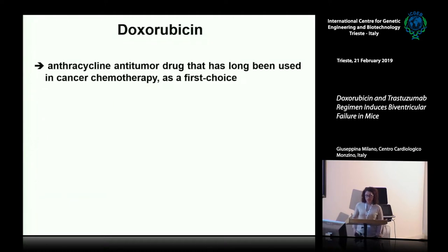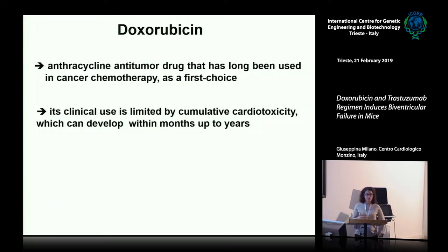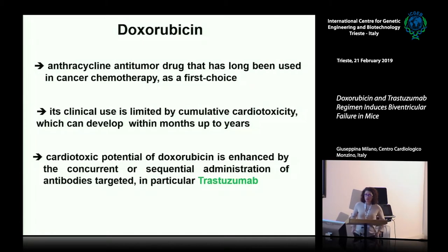Doxorubicine is an anthracycline used in many tumors including breast cancer. It is one of the most effective anti-tumoral drugs developed, but its clinical application is limited by persistent cardiac side effects. Furthermore, Doxorubicine increases cardiac dysfunction when administered together with or before antibody targets such as Trastuzumab.